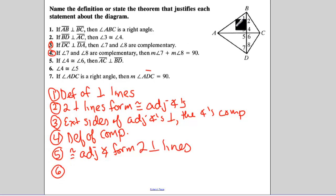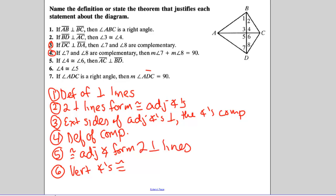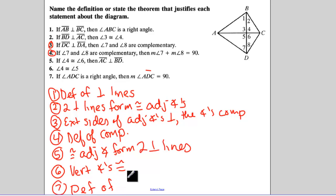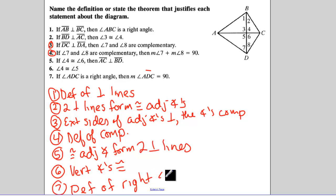Number six: if angle four is equal to angle five, remember that's not the definition of vertical angles — that's the theorem that we prove vertical angles congruent. And number seven: if angle ADC is a right angle, then the measure of ADC is equal to 90. That is our definition of a right angle.